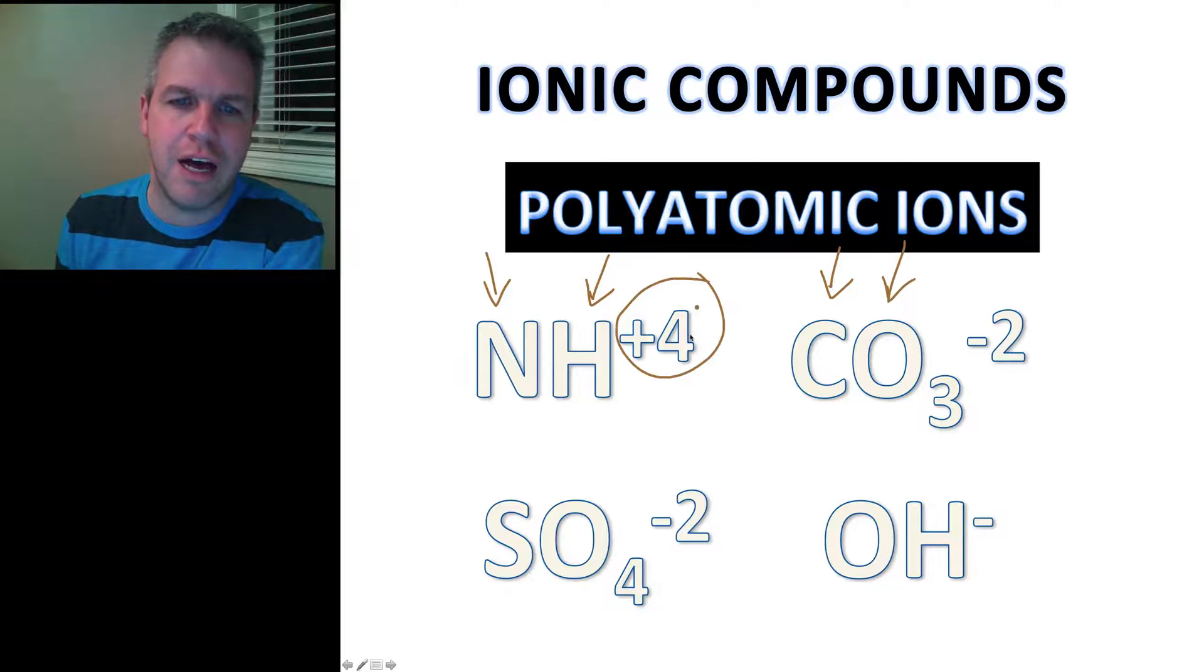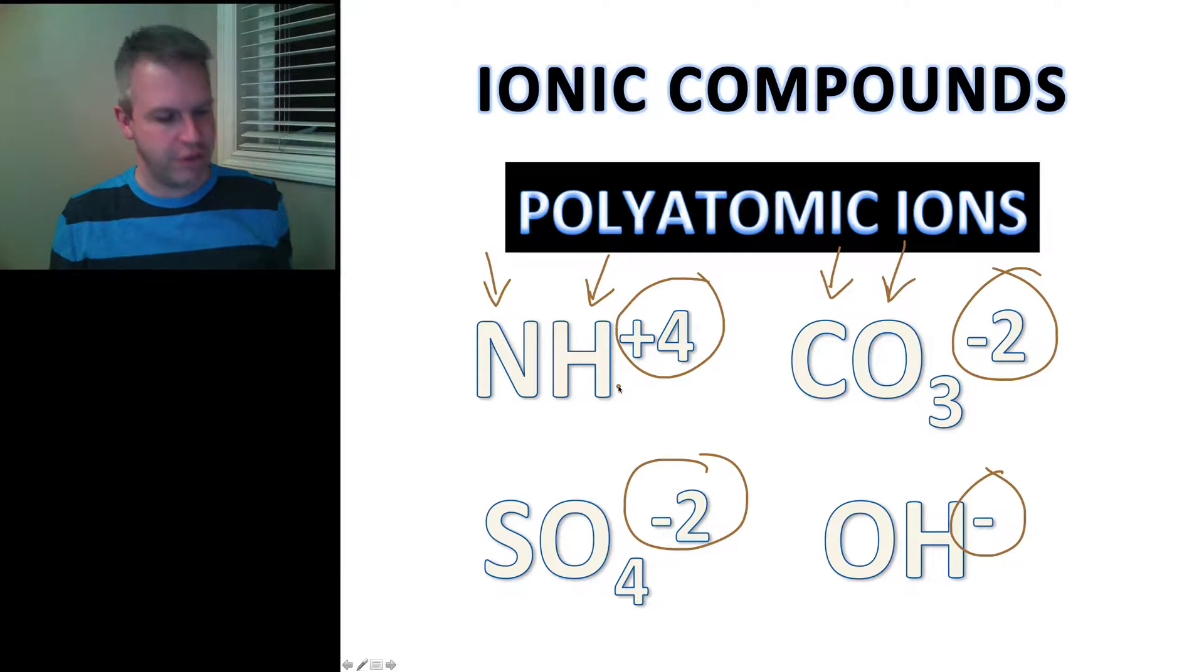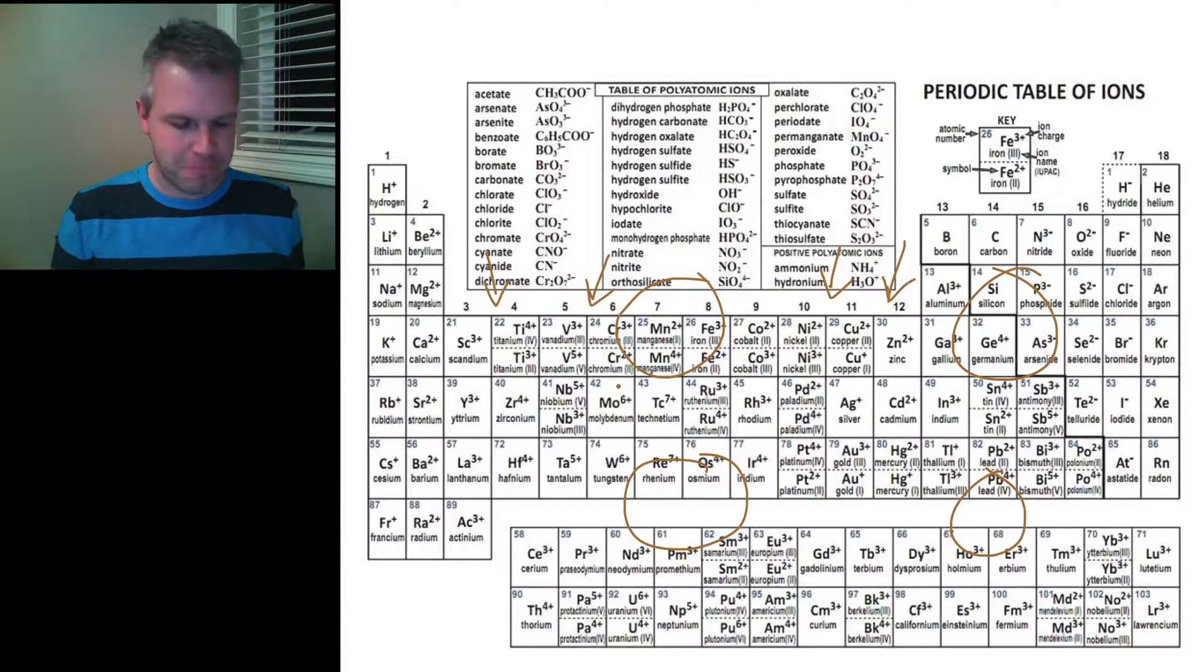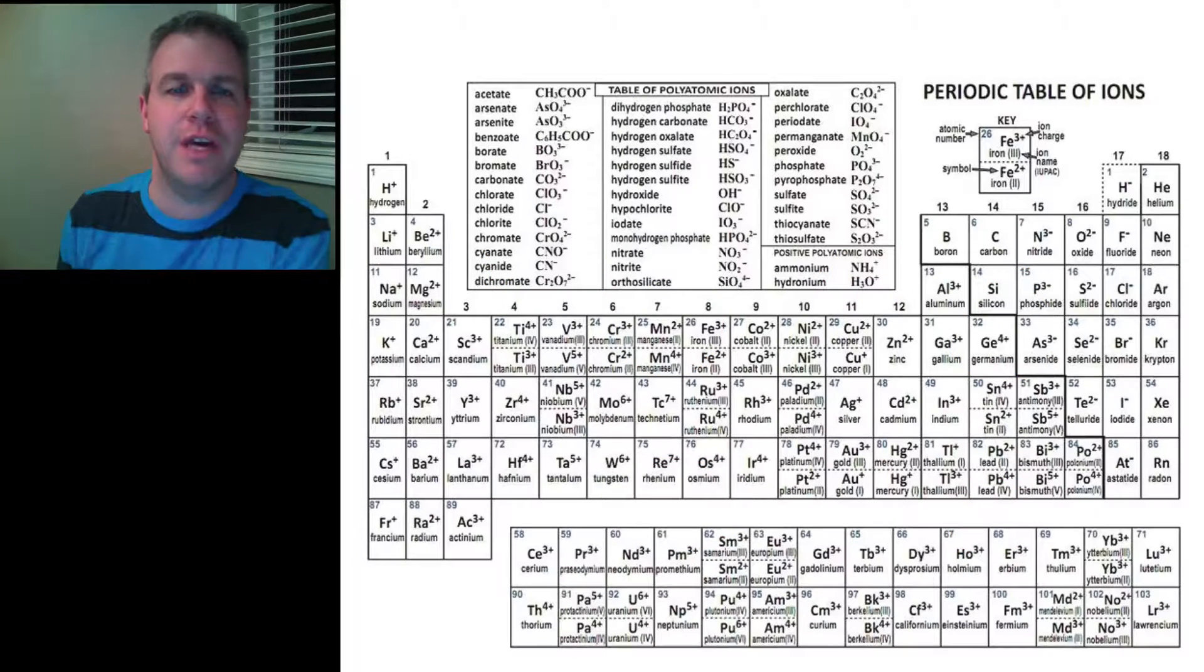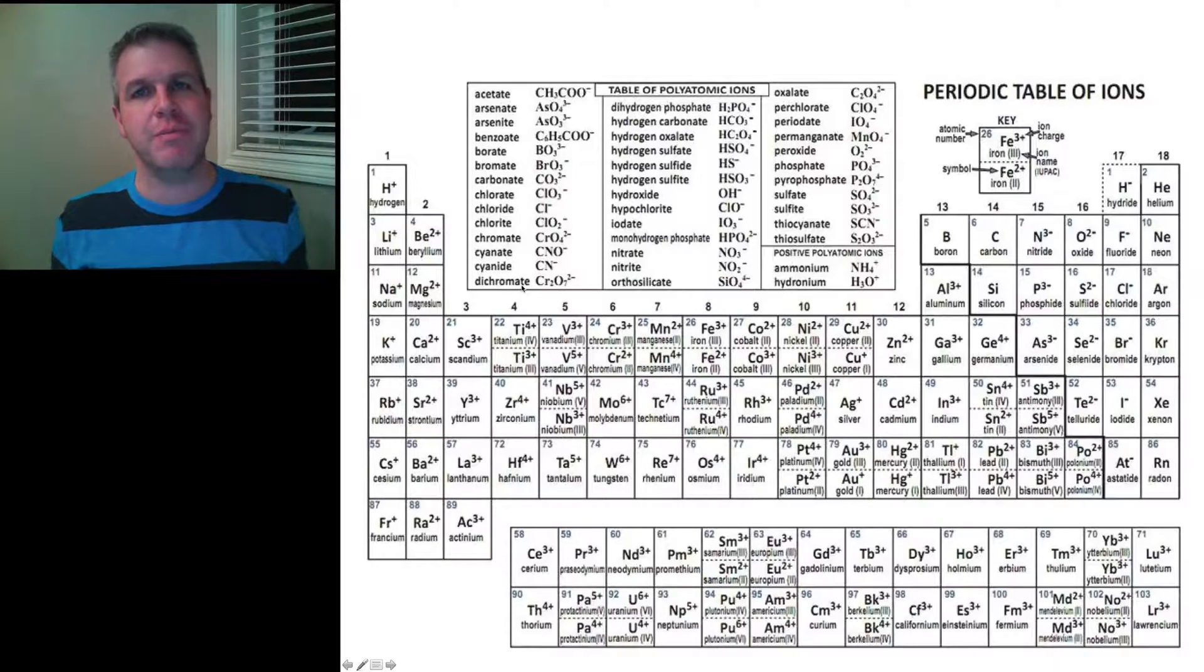The majority of them are negative, you can see here, and there are a few positive ones. But again you just have to take a look at your table and you treat them exactly the same way as you would any other ion when you write the formula. And I'm going to give you a number of examples in my following video about how to name these.